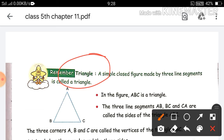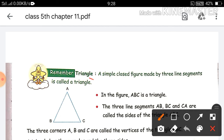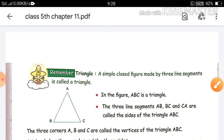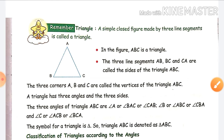Let's start our video. Triangle — what is a triangle? A simple closed figure made by three line segments is called a triangle. You can see the figure on the side which has a triangle. Triangle has three line segments: line segment AB, line segment BC, and line segment CA. Joining these three makes a closed figure, which we call a triangle. So in the figure, ABC is a triangle and the three line segments are AB, BC, and CA — these are the sides of triangle ABC.